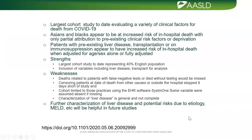This is the largest cohort study to date evaluating a wide variety of clinical factors for death from COVID-19. It confirms that Asians and Blacks appear to be at increased risk of in-hospital death — seen in previous smaller studies — with only partial attribution to pre-existing clinical risk factors or deprivation. Patients with liver disease, transplantation, or immunosuppression appear to have increased risk when adjusted for age and sex alone or fully adjusted. Strengths include representing over 40% of the English population and inclusion of liver disease and transplantation variables.